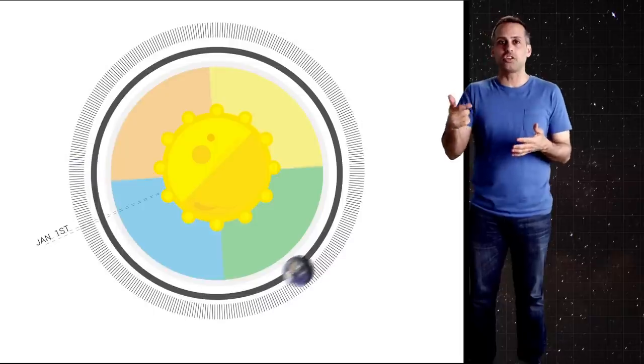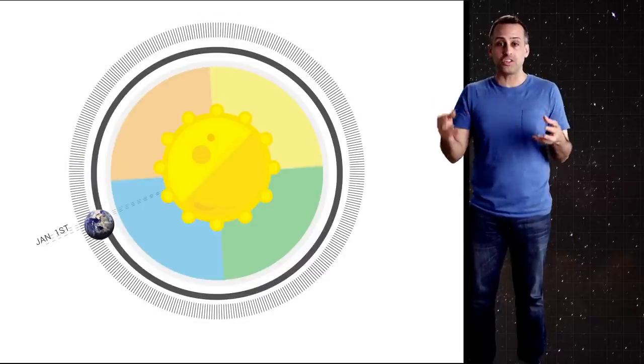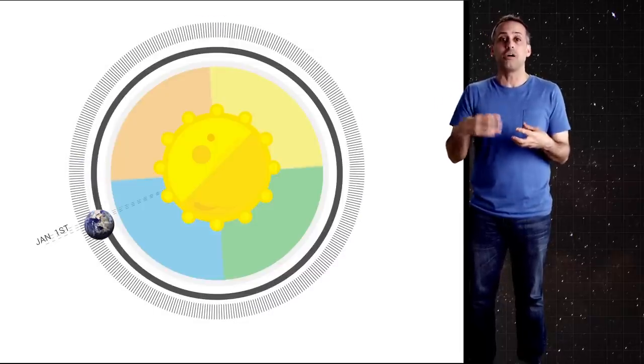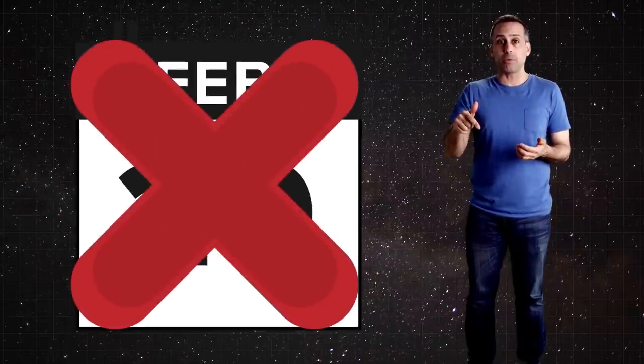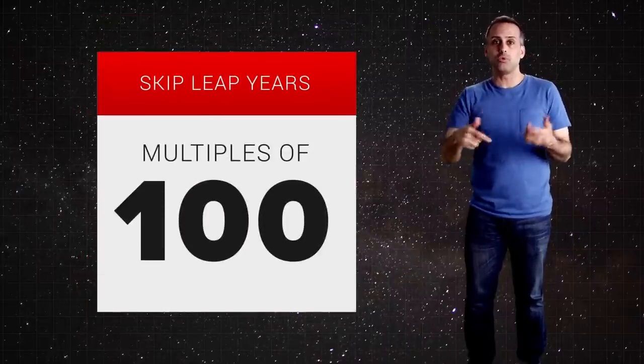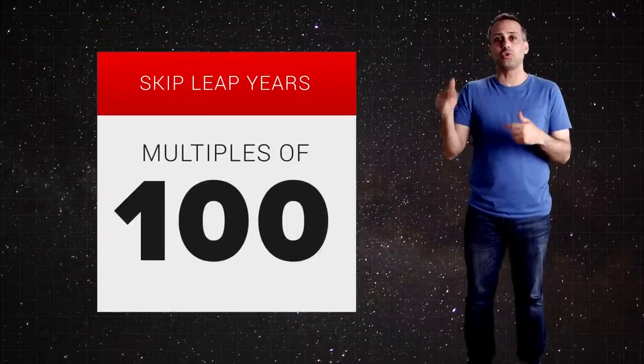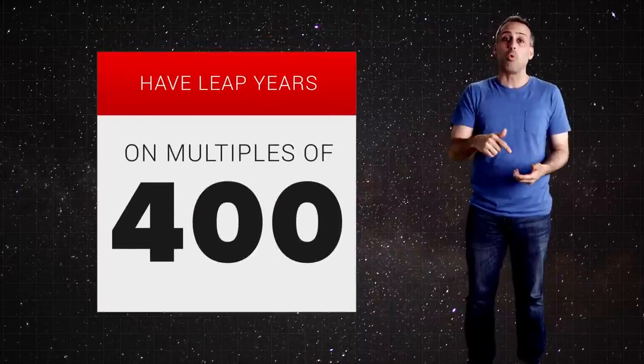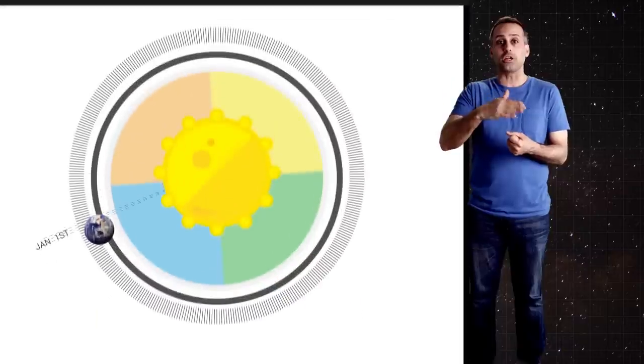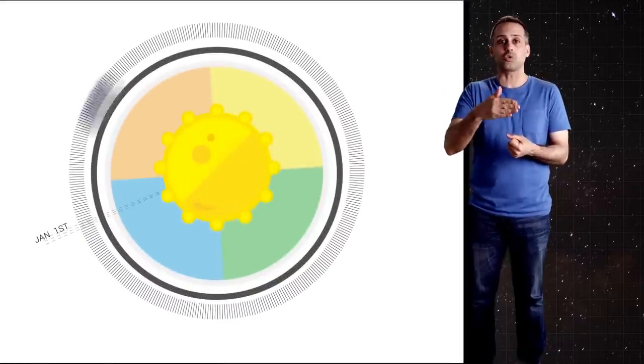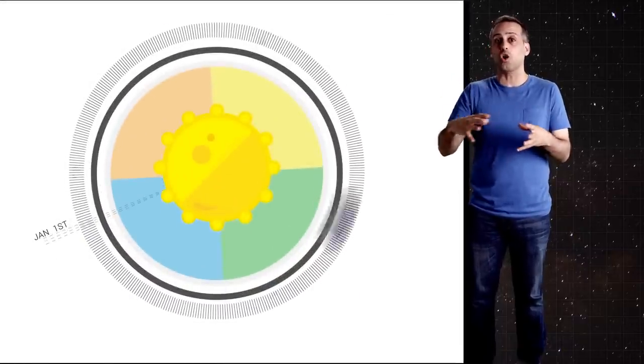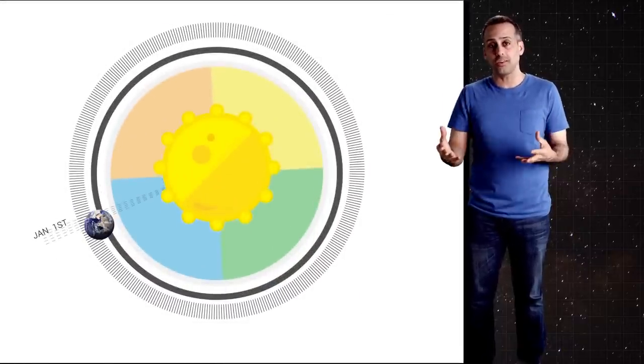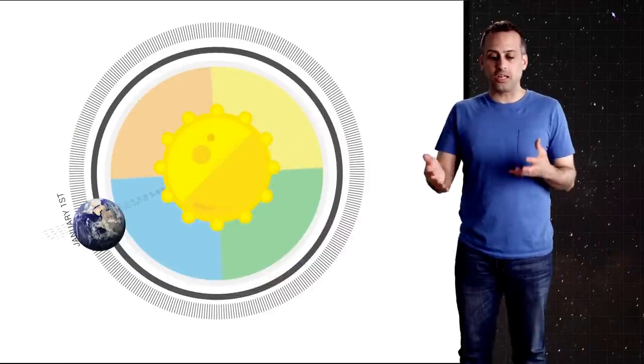This syncing to the seasons and the adjustment for the not-quite-six-hour thing are achieved simultaneously in the calendar system via two extra rules for skipping leap years. You skip leap years when the year is a multiple of 100, but then you ignore that rule and have a leap year anyway when you shouldn't if the year is a multiple of 400. This results in alternately overshooting and then undershooting every century in order to offset any long-term drift between the calendar and the seasons. So this system keeps the calendar in sync with the seasons.